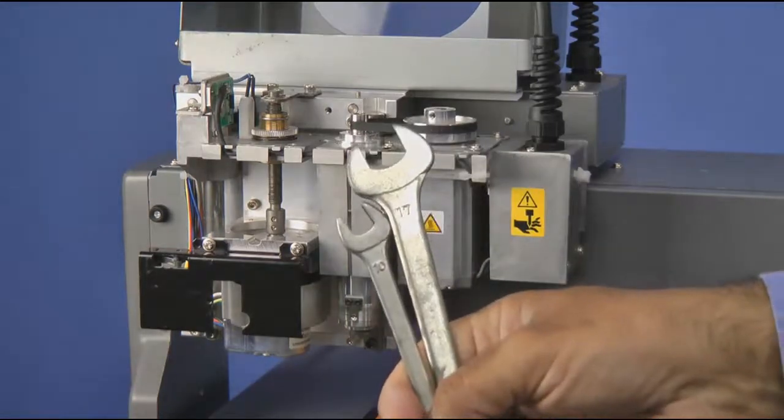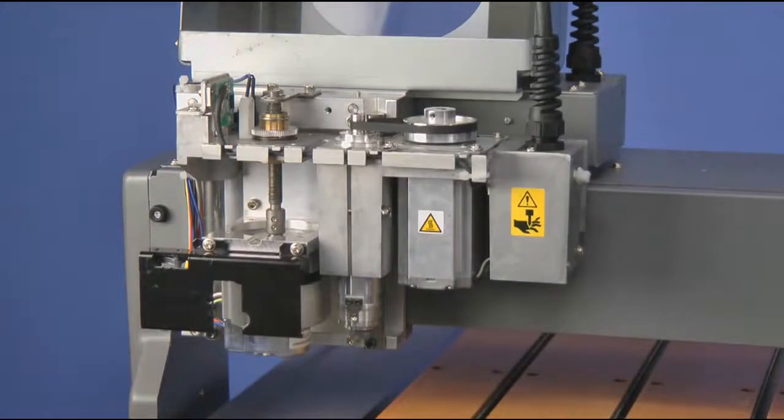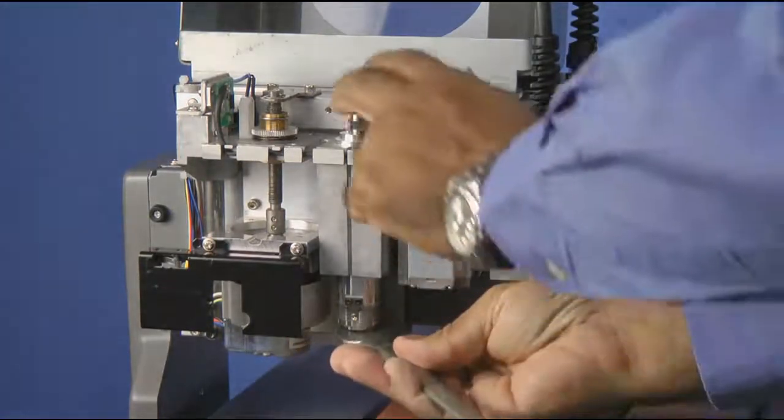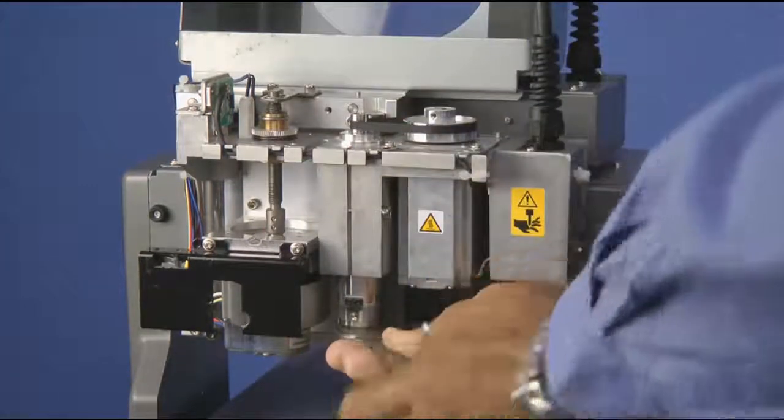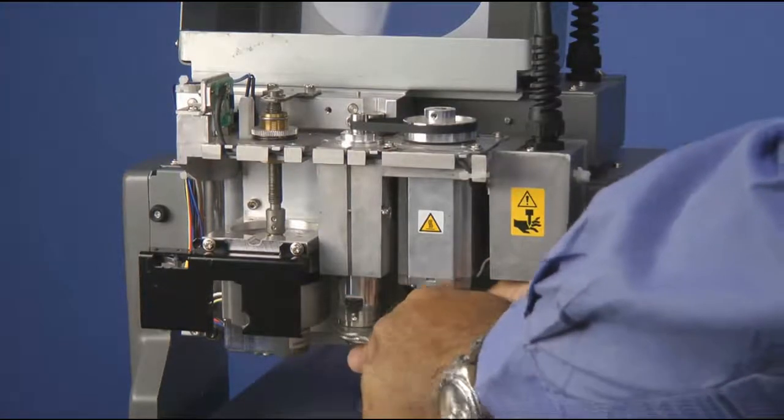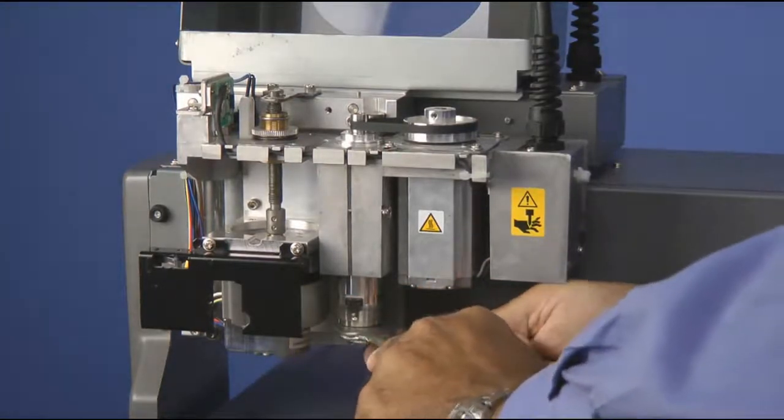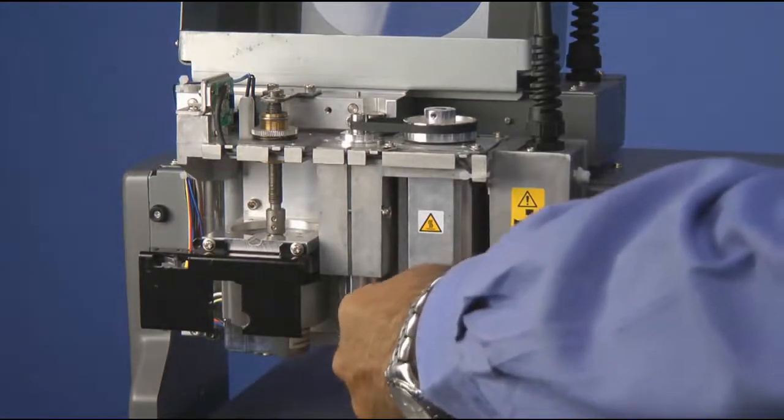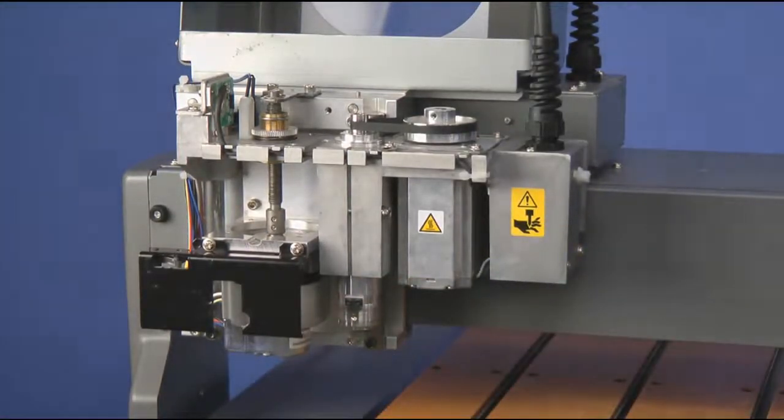you want to use the supplied spanner wrenches to secure the collet in place. You want to place your 17mm tool on first and then take your 10mm and pull opposite of each other to tighten them down.